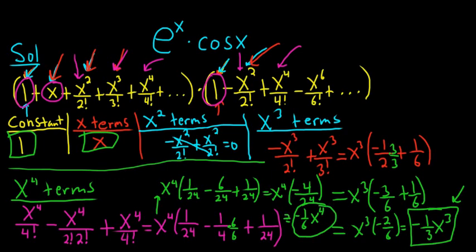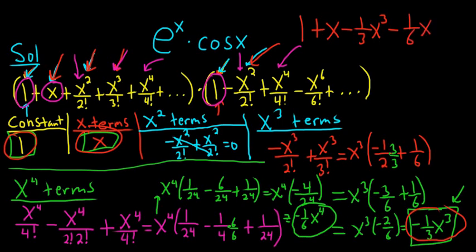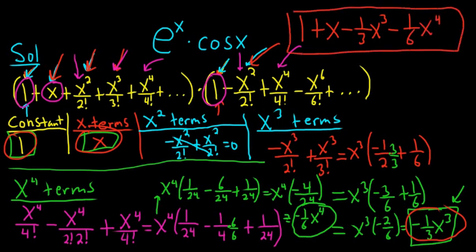So the answer is 1 plus x minus 1/3 x cubed minus 1/6 x to the 4. That is the final answer. I hope this video has been helpful.